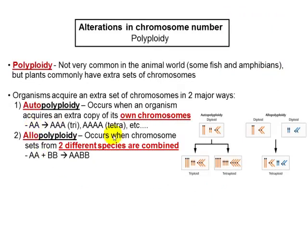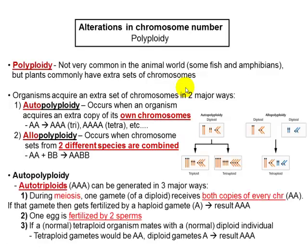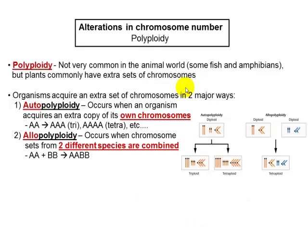With polyploidy, as mentioned, it is not very common in the animal world. Some fish and maybe some amphibians will have that type of mutation. But it's very common with plants — you can have a lot of gene manipulation for crops and plants by just combining different sets of chromosomes.